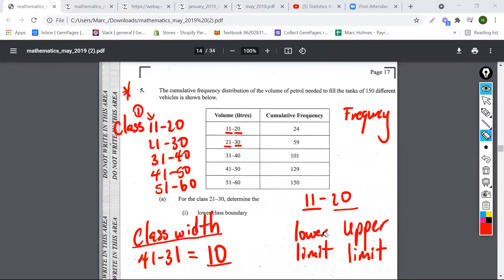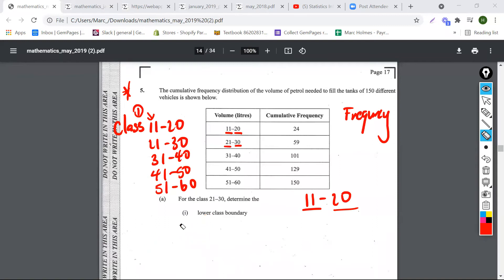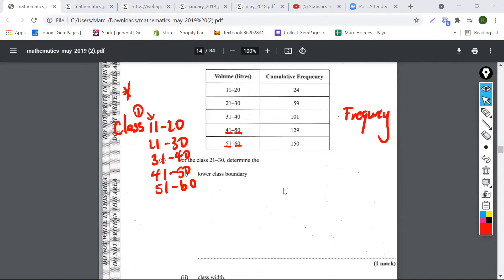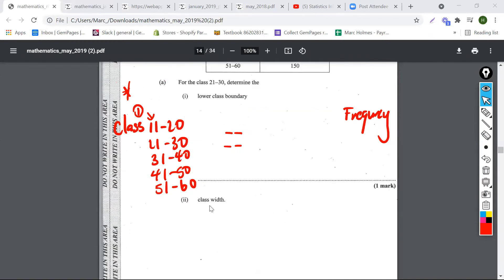These are just some general terms that we need to know related to the exam. Let me scroll down. Here it's asking for the lower class boundary, but if you look here it says, 'What is the class width for the class 21 to 30?'